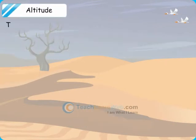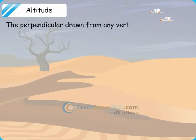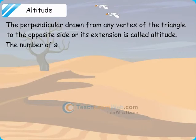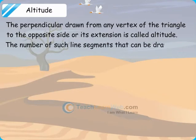Altitude: The perpendicular drawn from any vertex of the triangle to the opposite side or its extension is called altitude. The number of such line segments that can be drawn in the triangle is 3.